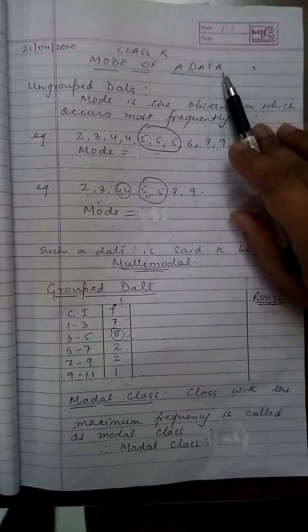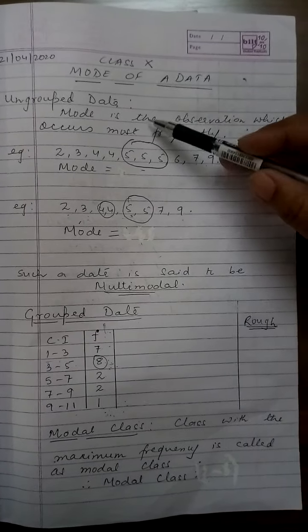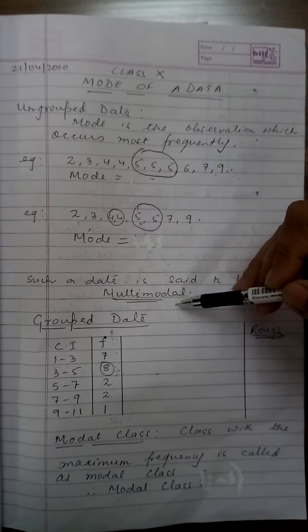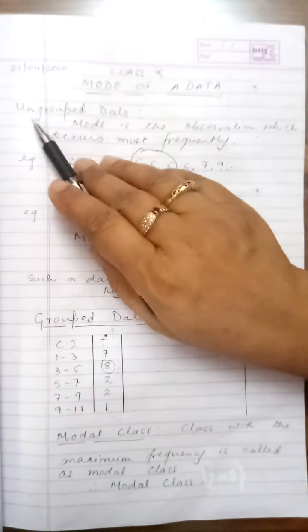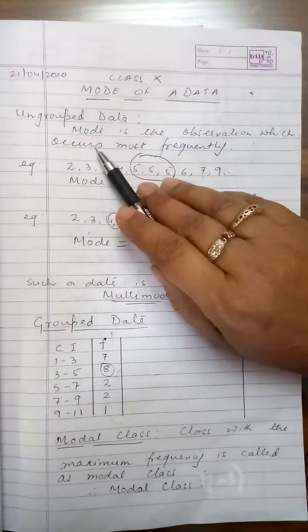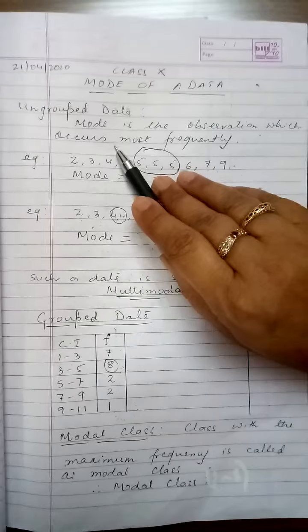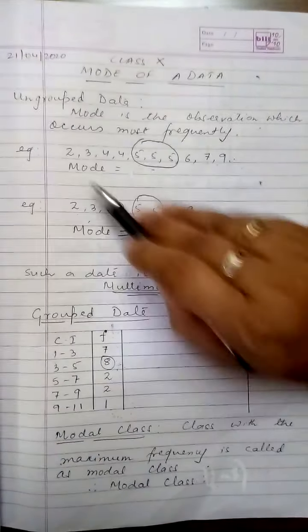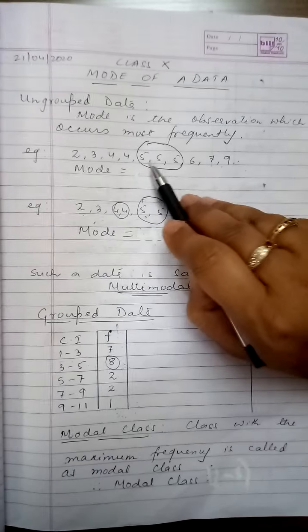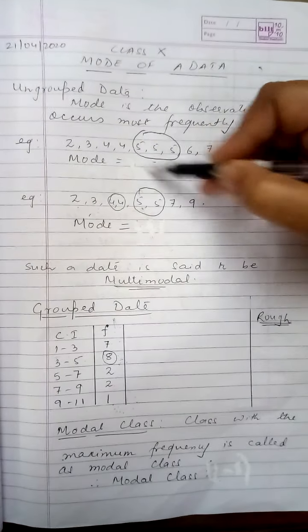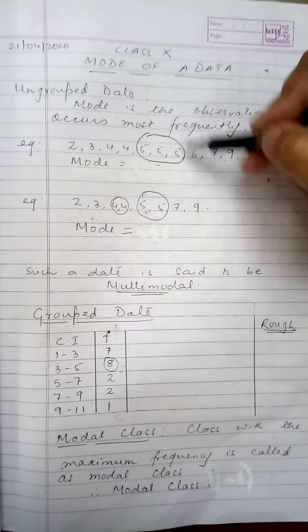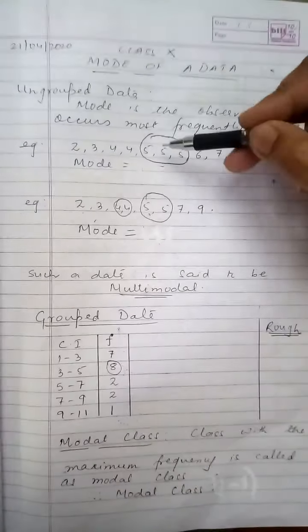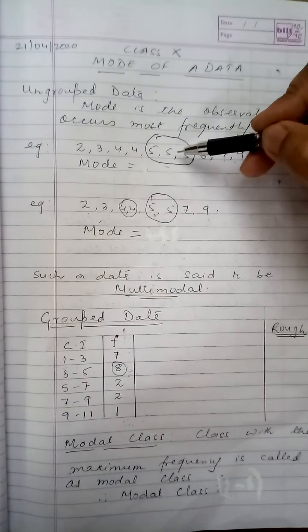But before I proceed to grouped data, let me just do a quick recapitulation of what we did in class 9th. When I take an ungrouped data, the mode is the observation which occurs most frequently. Now in this given data over here 2, 3, 4, 4, 5, 5, 5, 6, 7, 9, I have encircled 5 which is occurring 3 times.